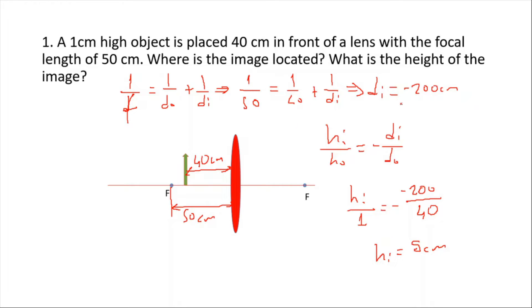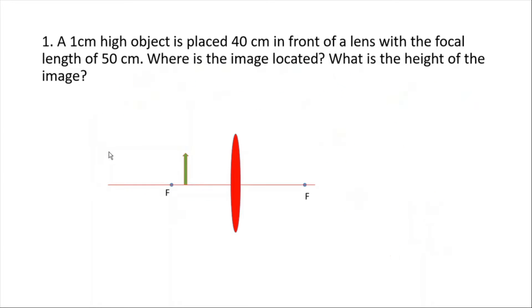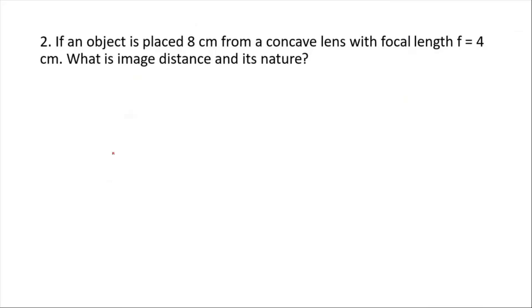This means the image is upright and virtual, because the image distance is negative 200 centimeters. The image is five times bigger than the object. The image is going to be located on the same side as the object. Let's move to the next example.